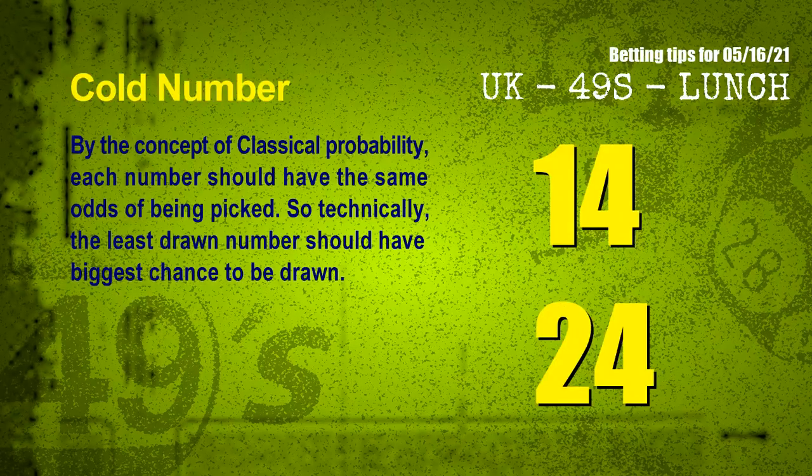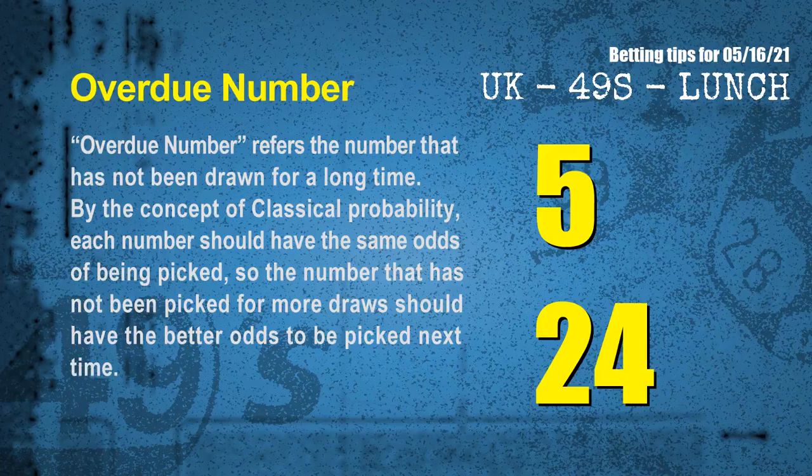In the end of this video we have two more tips: cold numbers and overdue numbers. By the concept of classical probability, each number should have the same odds of being picked. So the least drawn number should have the biggest chance to be drawn. After counting thousands of results, the coldest two numbers for next draw are 14 and 24. Overdue numbers refer to numbers that have not been drawn for a long time. The most overdue two numbers are 05 and 24.